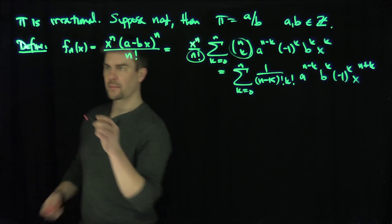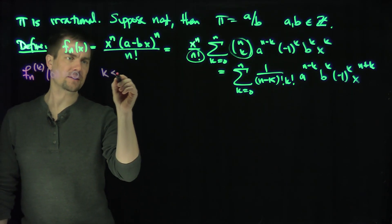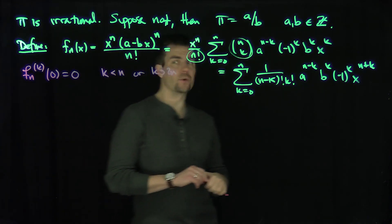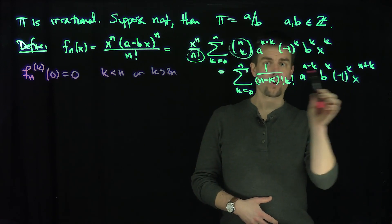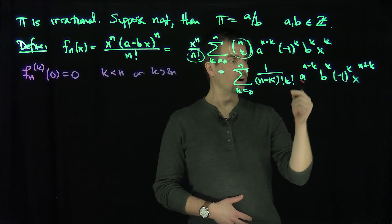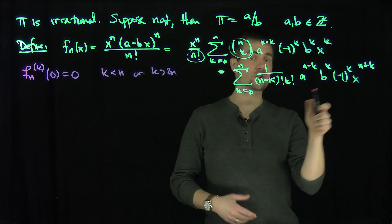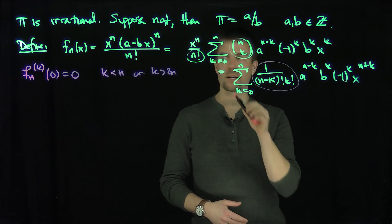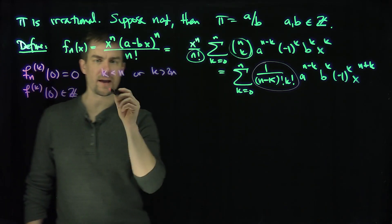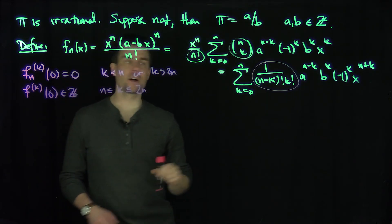So in other words, if I compute derivatives of this function, I know that f_n^(k)(0) is going to be zero if k is less than n or k is bigger than 2n, because that's a polynomial of degree 2n. Now, if I do at least n derivatives of this thing, I'm going to have an n factorial that comes down, so there's going to be no denominator. So it turns out that f_n^(k)(0) is an integer when k is between n and 2n, and zero otherwise. So we have integer values of the derivatives of this function.